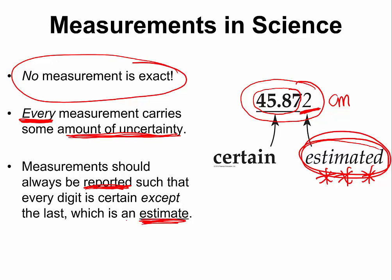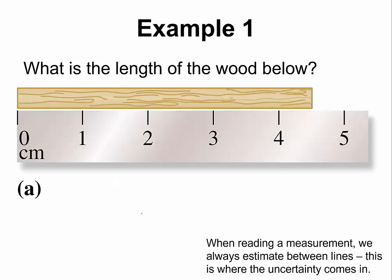The last digit is always a guess. Let us take a look at this example. I've asked many of my students to tell me what they would record as the length of this piece of wood. Some of them told me they would record 4.55 cm, and some people said 4.55 cm. Which of these answers would be correct?